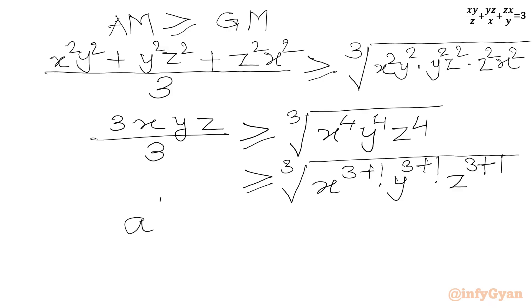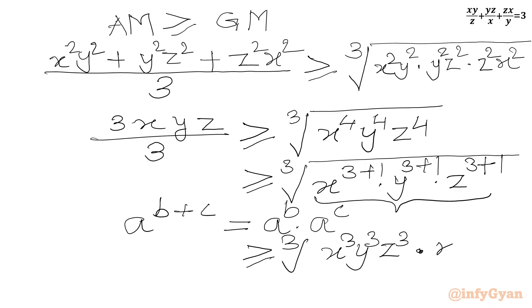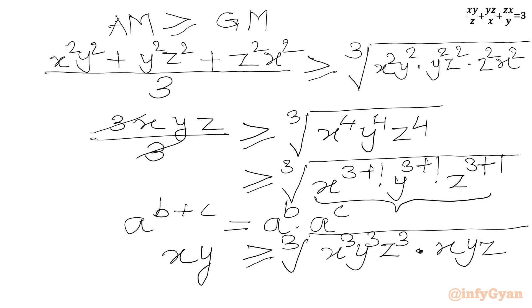We apply the exponent law a^b · a^c = a^(b+c). So the expression inside the cube root becomes x⁶ · x · y⁶ · y · z⁶ · z, which gives us x⁷y⁷z⁷, or equivalently x³y³z³ times xyz. The LHS simplifies to xyz, giving us xyz ≥ cube root of x³y³z³ times xyz.